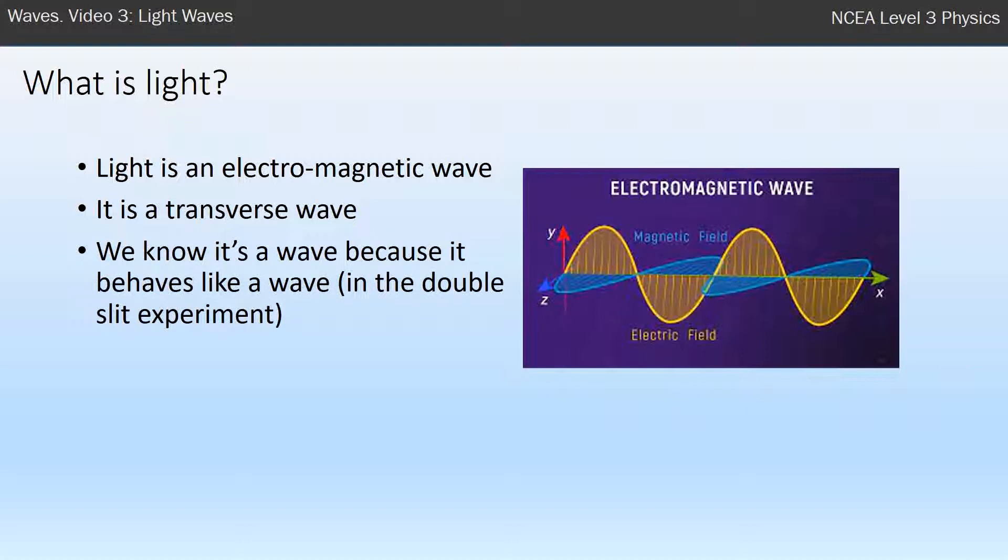So one of the experiments we're going to introduce in a video, about five or six videos from now, is about a double slit experiment and interference. And light behaves like we'd expect a wave to. And so that's how we know that light is a wave. Another video will go into that in far more depth.